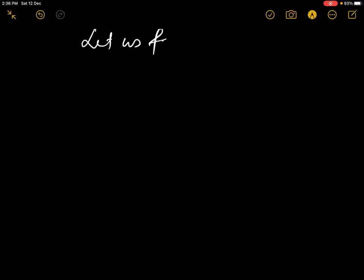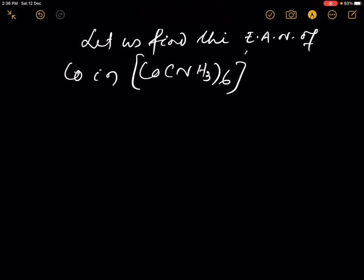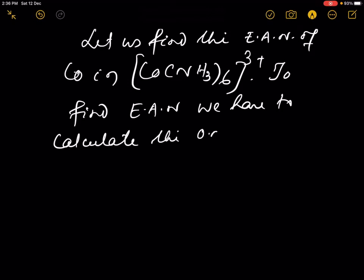Let us find the effective atomic number of cobalt in [Co(NH3)6]3+. To find the effective atomic number, we have to calculate the oxidation number of cobalt in the complex ion.